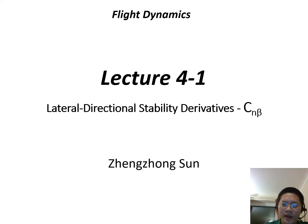We will have a series of lectures on the derivation of stability derivatives. This mini-lecture will be the first one of this series. It's about one of the lateral directional stability derivatives called C_nβ, which is a yaw moment change due to the sideslip velocity.